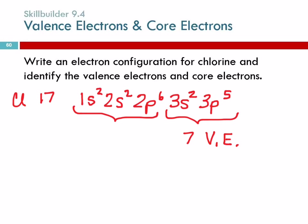Everybody else on the lower floors, those are core electrons. 2 plus 2 plus 6 is 10. Any questions?